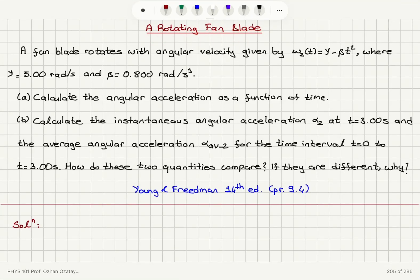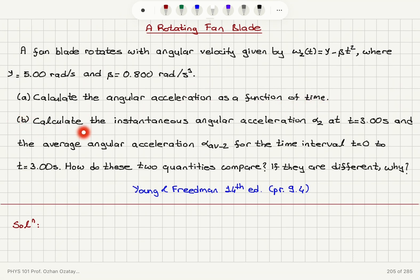A rotating fan blade. The fan blade rotates with angular velocity given by omega z of t equal to gamma minus beta t squared, where gamma is 5 radians per second and beta is 0.8 radians per second cubed. Part A: calculate the angular acceleration as a function of time. Part B: calculate the instantaneous angular acceleration alpha z at t equals 3 seconds and the average angular acceleration for the time interval t equals 0 to t equals 3 seconds. How do these two quantities compare? If they are different, why?